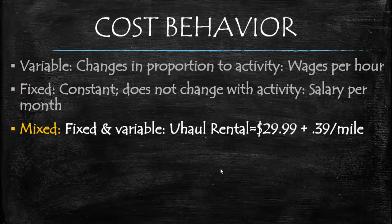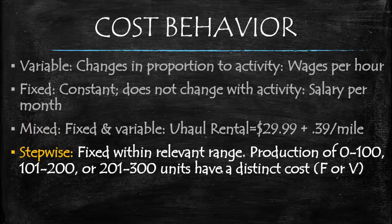Mixed costs represent a combination of both variable and fixed cost behaviors. For example, if one were to rent a U-Haul, the fixed fee might be $29.99 a day but you pay $0.39 per mile. The other two costs that round out the five — step-wise costs — represent a unique type of cost behavior in that it is fixed but only within a relevant range.